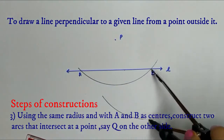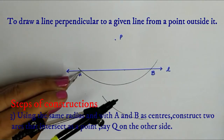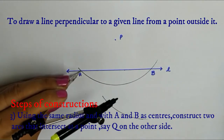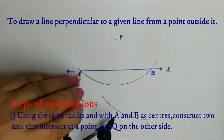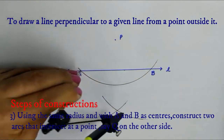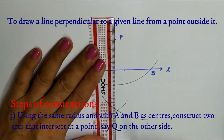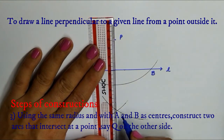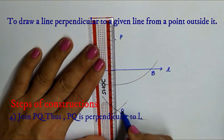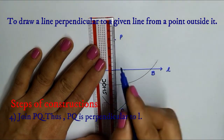Using the same radius and with A and B as centers, construct two arcs that intersect at a point. Let us name this point Q, which is on the other side of the line L.